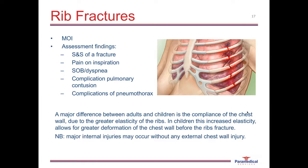A major difference between adults and children is that children's ribs are highly flexible and their chest wall more compliant. If a child undergoes the same blunt force trauma as an adult, the child will have greater deformation of the chest wall before rib fractures occur, meaning we must be highly suspicious of major internal injuries with or without external chest wall injuries. Management includes assessing airway, breathing and circulation, a thorough focused chest exam, and vital signs. If signs of hypoxia are present, administer oxygen therapy. Providing appropriate pain relief is essential, as reducing pain will allow the patient to ventilate more effectively.